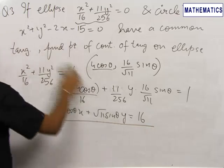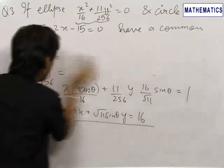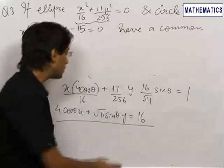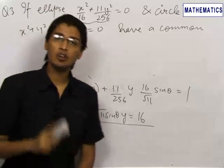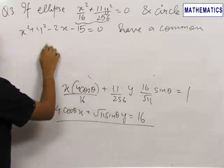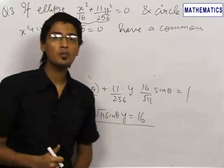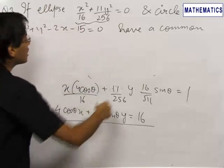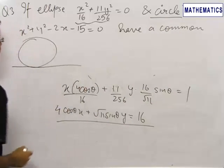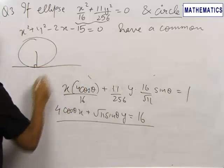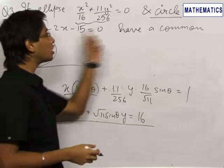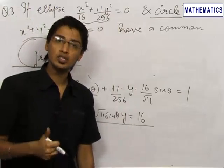We can apply either of the two methods discussed. We can write the tangent equation for the circle and compare it, or put y in terms of x and set discriminant to 0. However, since one of the special curves is a circle, we can draw a perpendicular from the center onto the tangent and equate it to the radius of the circle.